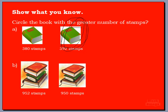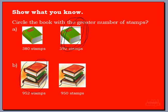So nine hundreds and five tens — let's look at our ones. The one on the left has two ones and the one on the right has zero ones. Boys and girls, left side or right side — which one has the greater number of stamps? That's right, the one on the left with nine hundred and fifty-two stamps, because two ones is greater than zero ones.